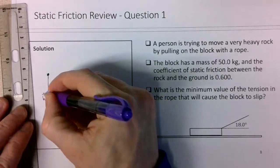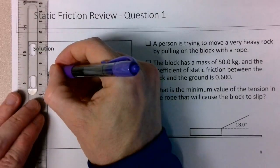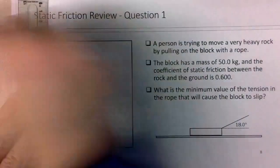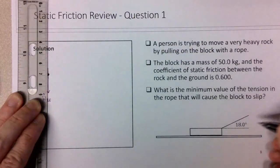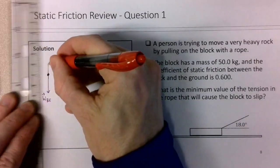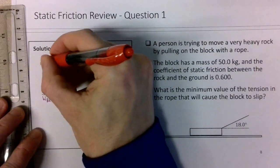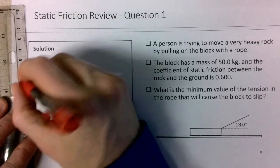There is a normal force, which is not the same magnitude as the weight force because of this y-component in the tension. It's a little bit smaller. Normal force on the block by the ground, I'll say.